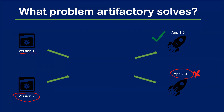Without an artifactory, you'd have to go back to the SCM tool, find that particular version in Git, generate the artifact again, deploy it, then get back those changes and create the artifact again for version two. This is a lot of workaround.